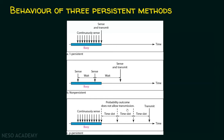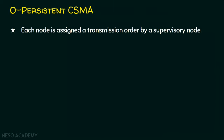The last persistent method is O-persistent. In O-persistent, each node is assigned a transmission order by a supervisory node. This supervisory node takes care of the transmission order among the stations involved so that collisions are handled effectively.